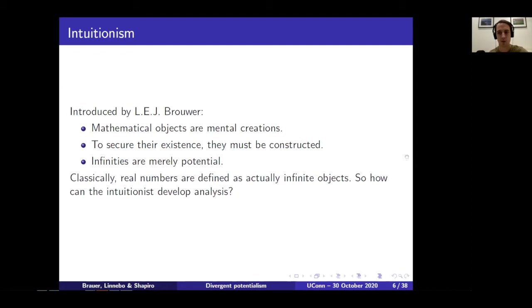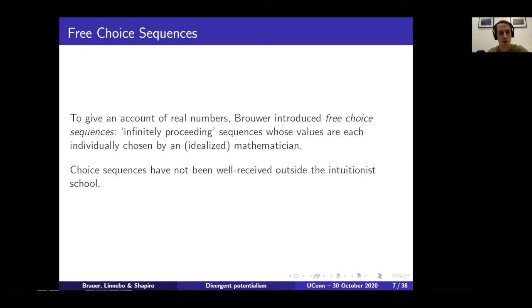This poses an obvious problem for how you want to give an account of the real numbers, given that under the classical approach, real numbers are defined as actually infinite objects — you might have actually infinite Cauchy sequences or Dedekind cuts, which are infinite sets. So there's the question: how is the intuitionist going to develop analysis given these limitations? Brouwer's solution is to appeal to this concept of a free choice sequence, which is potentially infinite — an infinitely proceeding sequence whose values are each chosen individually by a mathematician. These potentially infinite sequences are Brouwer's stand-ins for the role that Cauchy sequences play in the classical treatment.